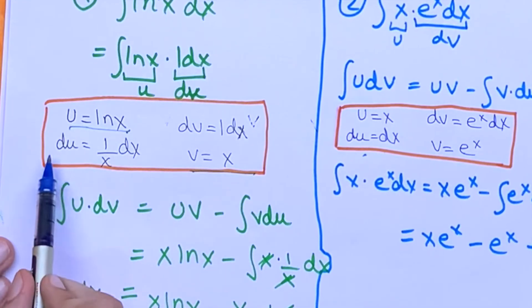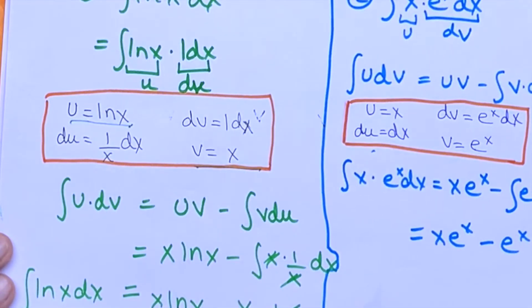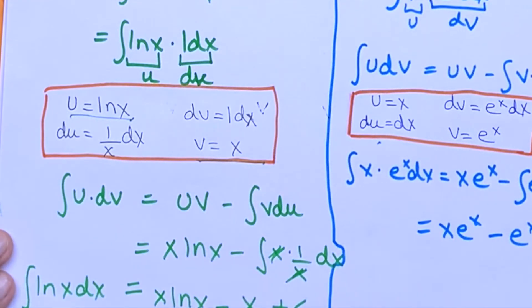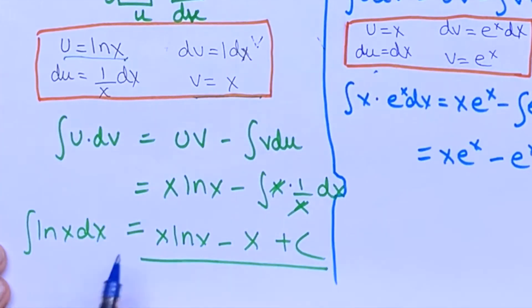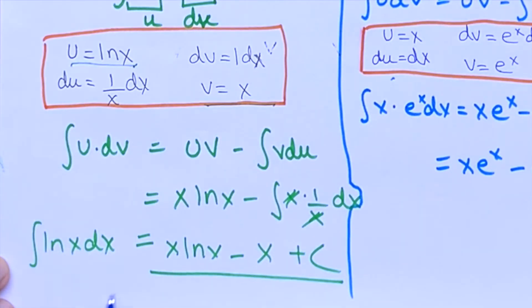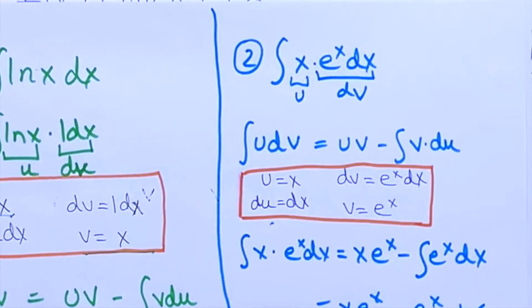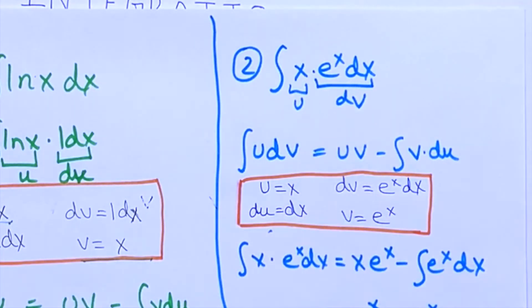This gives us du equal to 1/x dx, and v equal to x — I've differentiated u and integrated dv. So now if we just plug these values into the formula, we get the integral of the natural log of x dx is equal to x times the natural log of x minus x plus c.